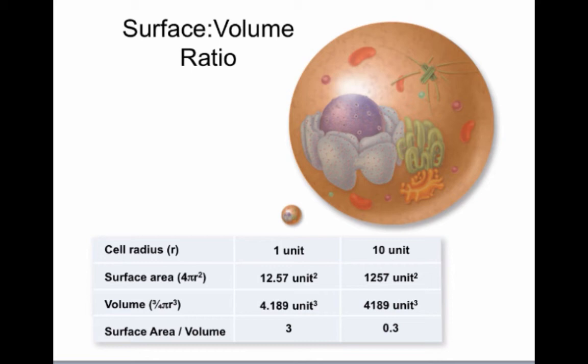As cells get larger and the surface area to volume ratio decreases, the efficiency of the cell is reduced. This is because cells perform most of their activities through their surface, through the cell membrane.